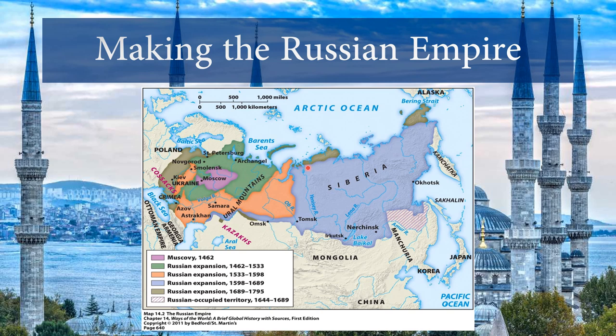They also conquered east into Siberia. Why? Fur. The fur trade was very important — the animals here have thick pelts, referred to as 'soft gold.' As they conquered, they spread their culture — the Russian language and Eastern Orthodox Christianity.